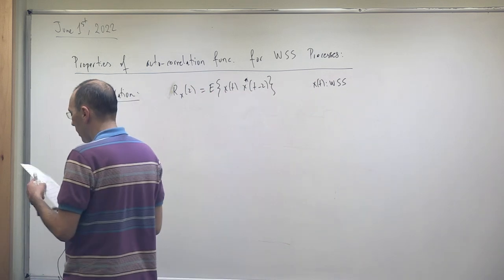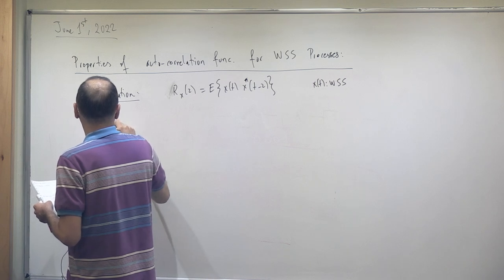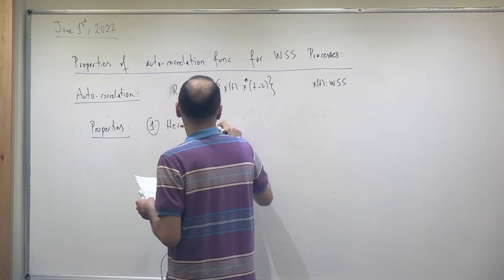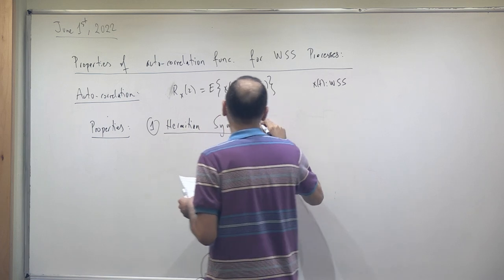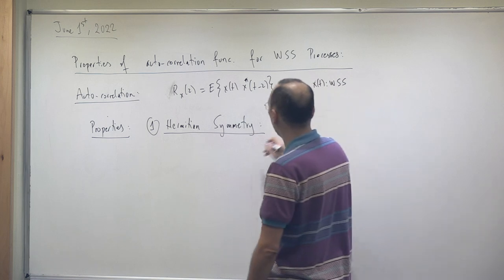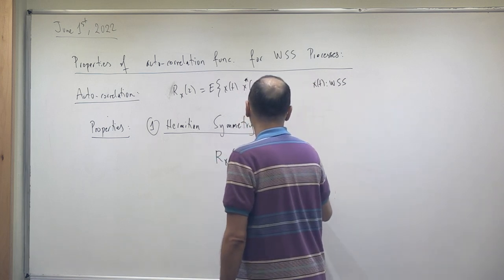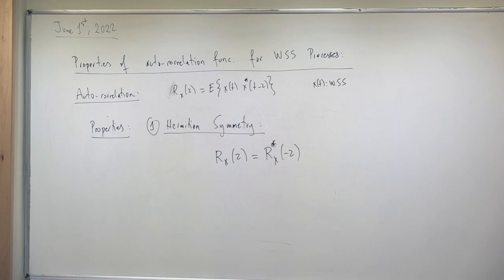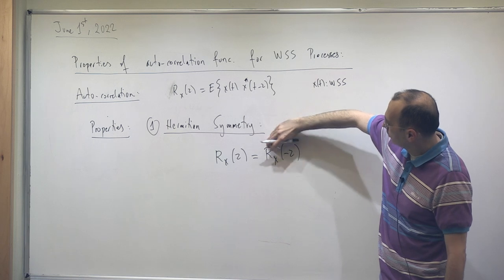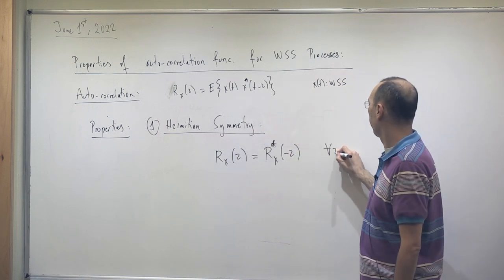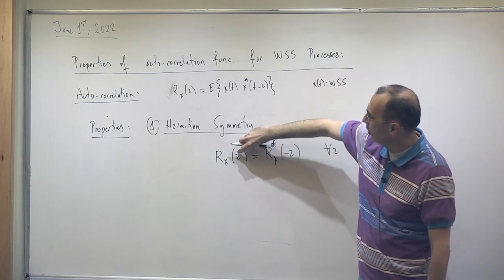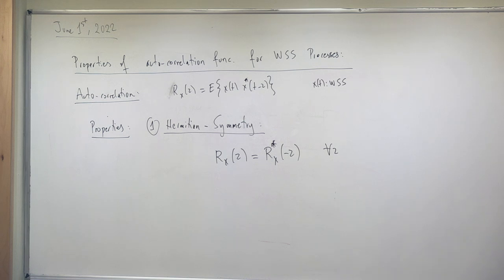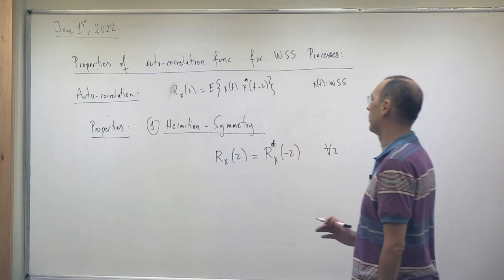We have already covered this. Now I would like to discuss the properties. Property number one: Hermitian symmetry. This property states that R_X(τ) equals R_X conjugate of (minus τ). If there is no conjugate, you would call this an even function for all τ. With the conjugate, it's called a Hermitian symmetric function — Hermitian means the conjugation operation.